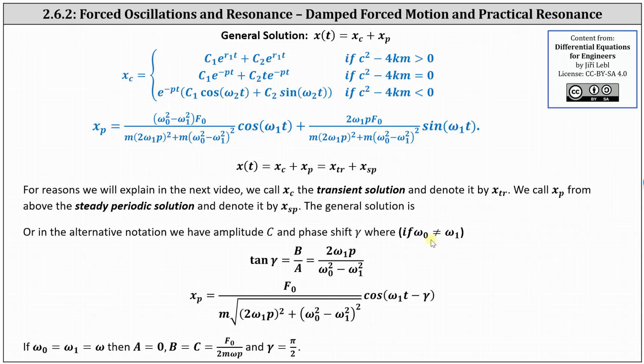If omega sub zero doesn't equal omega sub one, and if omega sub zero equals omega sub one, we can let both of them equal omega, and therefore A is equal to zero, B equals C, which is equal to big F sub zero divided by the product of two M omega P, and gamma is equal to pi divided by two.